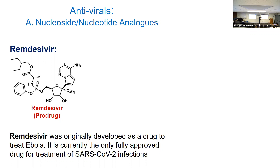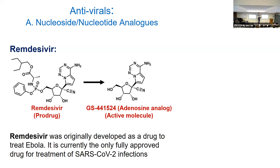Remdesivir is another nucleotide analog. It was actually developed not too long ago as a drug to treat Ebola, and when new viruses emerge, it's common to screen existing antivirals to see what works. Remdesivir is a pro-drug — you'll probably learn about this in pharmacology. What happens is your body modifies it, often in the liver, and it gets converted to the active nucleoside analog GS-441524. It works by targeting the viral RNA-dependent RNA polymerase (RdRp) during replication.